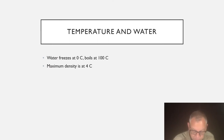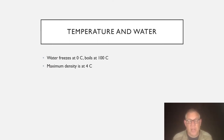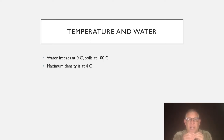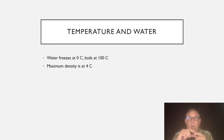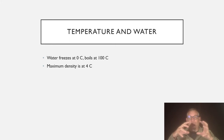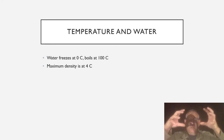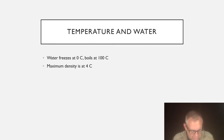Water freezes at 0°C and boils at 100°C. Its maximum density is at 4°C — at 4°C those water molecules are packed as tightly as they can be. If it gets even colder, they start to form that crystal lattice, and when it gets cold enough that crystal lattice becomes ice. That cold ice is able to float because there's more space between the molecules.